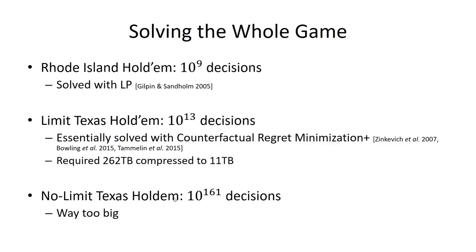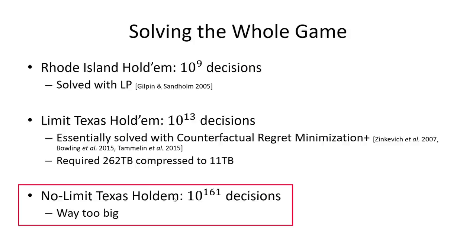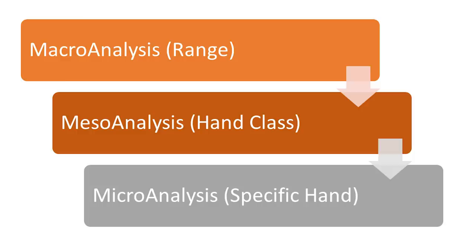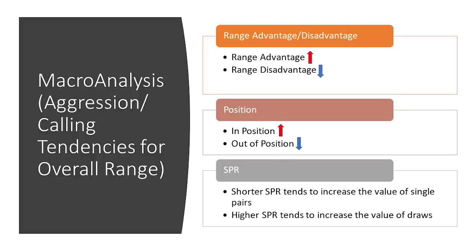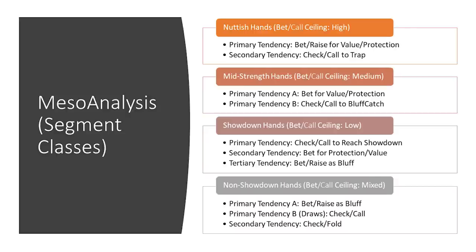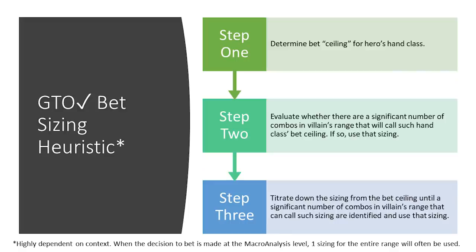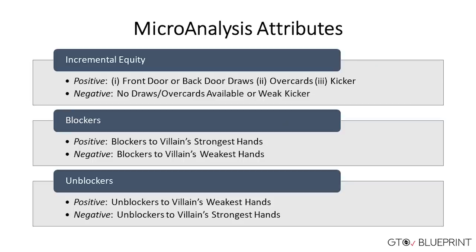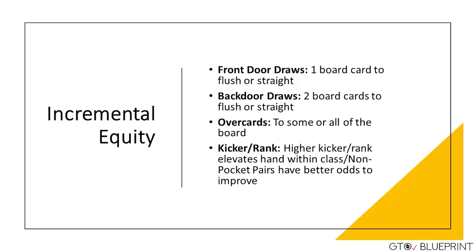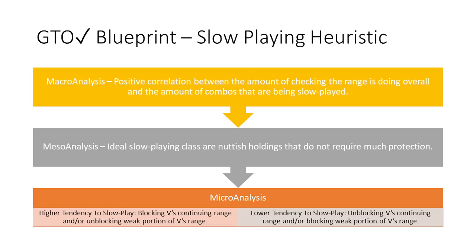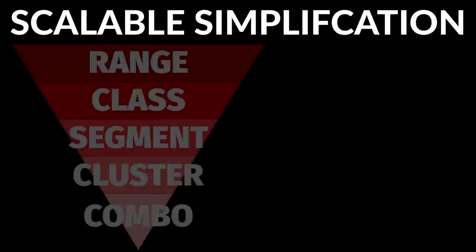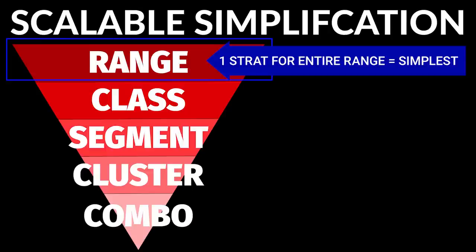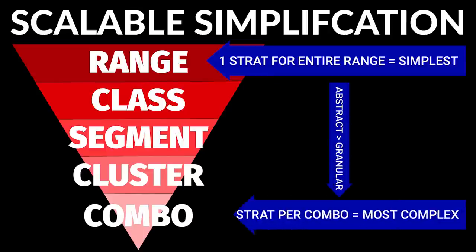Given that there are more possible scenarios in poker than there are atoms in the universe, this is an enormously complex task. So what we have done with GTO Check is we have taken years of solver work and research and devised a system that's designed to structure the solver's outputs in a manner that we believe is most conducive to learning the fundamental principles that drive these profit-maximizing strategies. The way we accomplish this is through a system of scalable simplification — we start our analysis at the highest level of abstraction possible, and we only move on to the more granular when doing so is necessary to improve our strategy significantly.